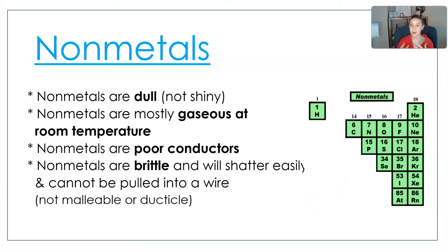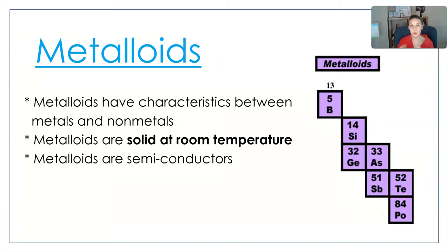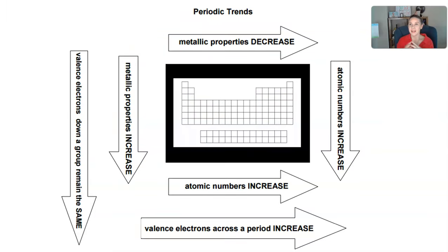Next, nonmetals are dull — not shiny. Nonmetals are mostly gaseous at room temperature, and they're poor conductors of heat and electricity. Nonmetals are brittle: if you were to bang a nonmetal with a hammer in a solid state it would shatter easily, and you cannot pull a nonmetal into a wire — it's not malleable and not ductile. Finally, metalloids have characteristics in between metals and nonmetals. Metalloids are solid at room temperature, but they are semiconductors — not great conductors like a normal metal.